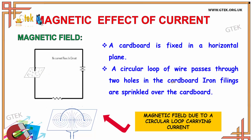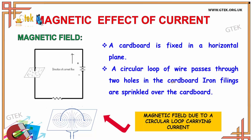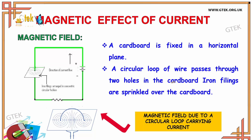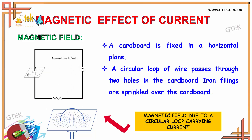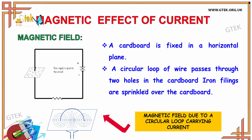So what is magnetic field? A cardboard is fixed in a horizontal plane. A circular loop of wire passes through two holes in the cardboard. Iron filings are sprinkled over the cardboard to show the magnetic field due to a circular loop carrying current.